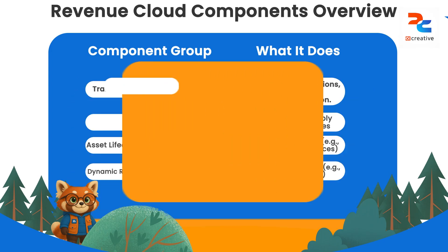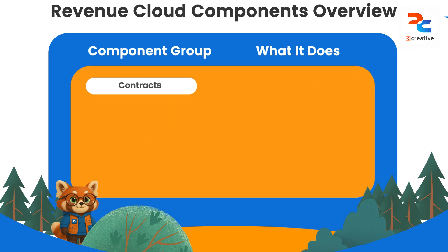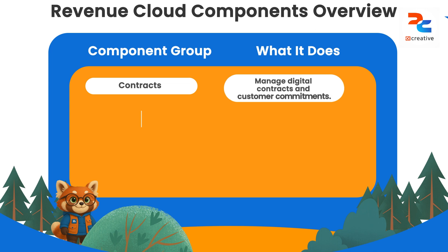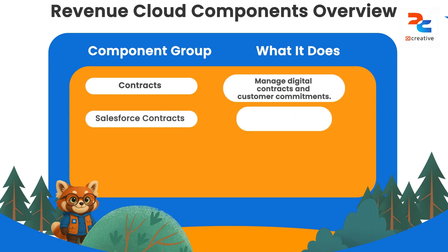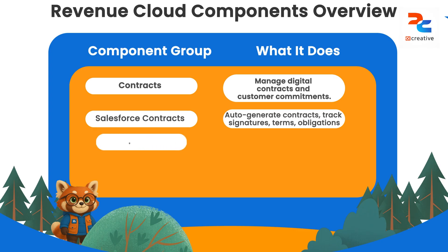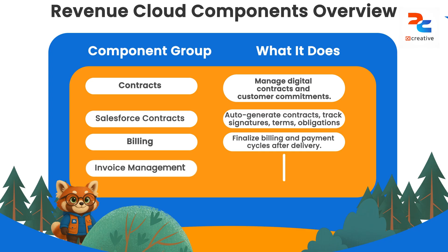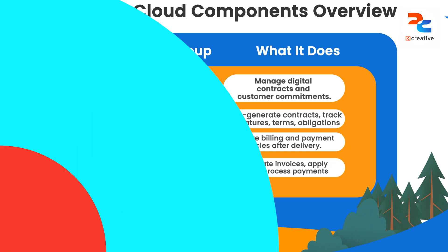Followed by a very important component called Salesforce Contracts, known as contract lifecycle management, where all your contracts are managed — the signatures, DocuSign, everything is managed inside that. Then you have the billing component, which contains invoicing management, invoice calculation, and bill and payment processing.